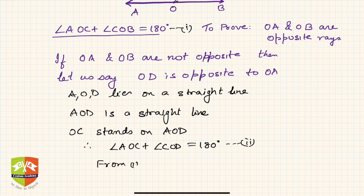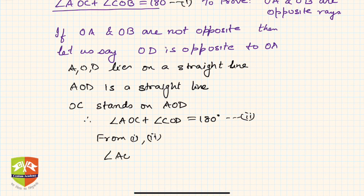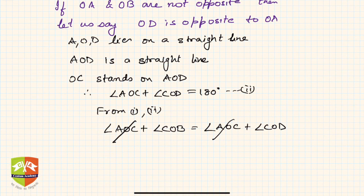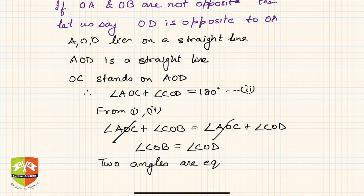From equations one and two, since both are equal to 180 degrees, I can equate them: angle AOC plus angle COB equals angle AOC plus angle COD. Clearly, angle AOC cancels from both sides. This implies angle COB equals angle COD. So two angles are equal, with CO as the common arm.